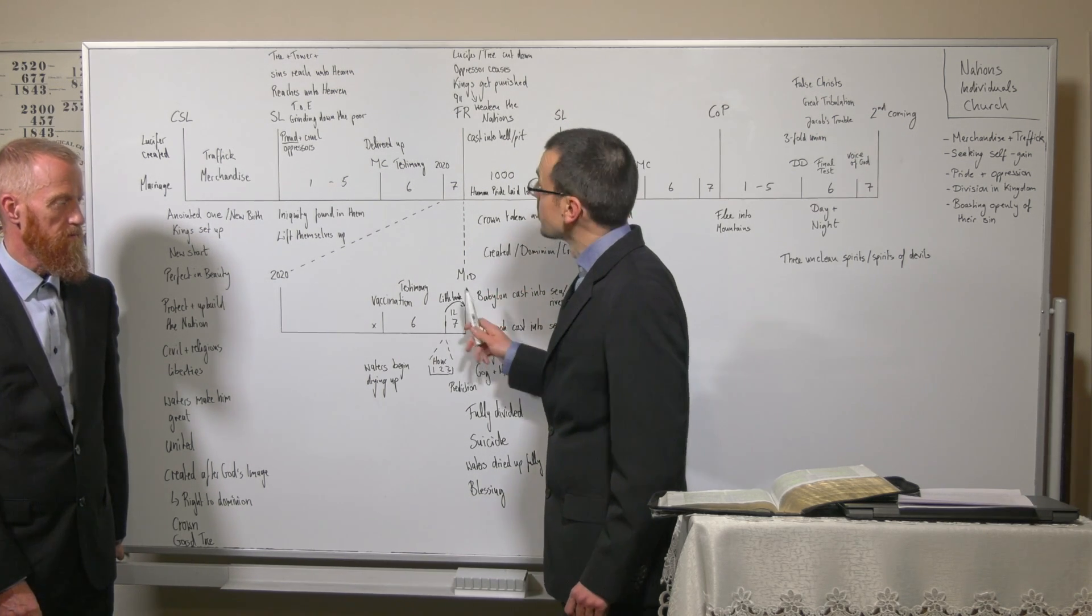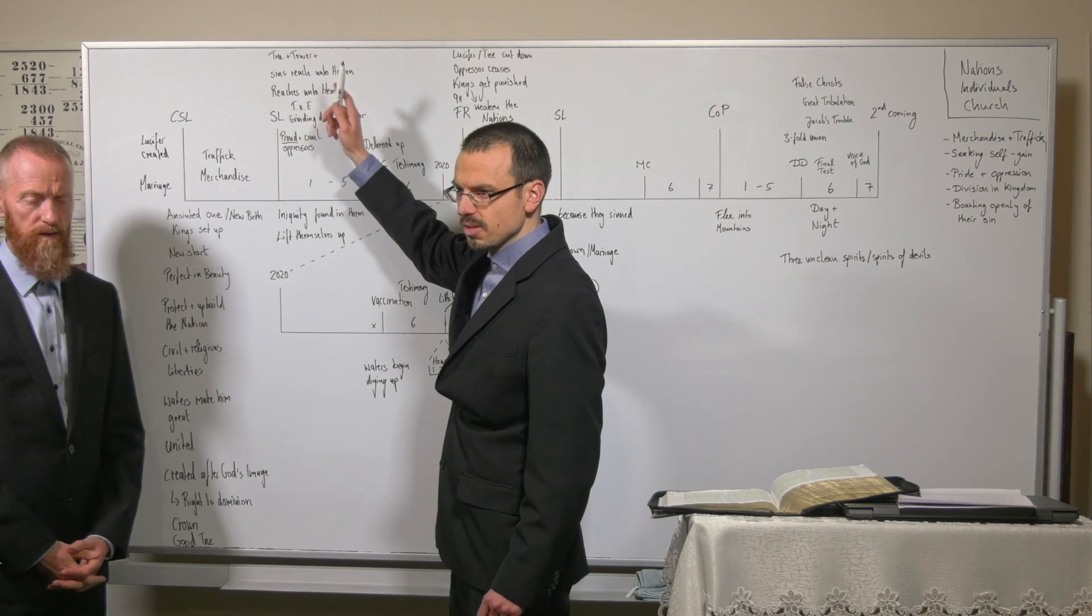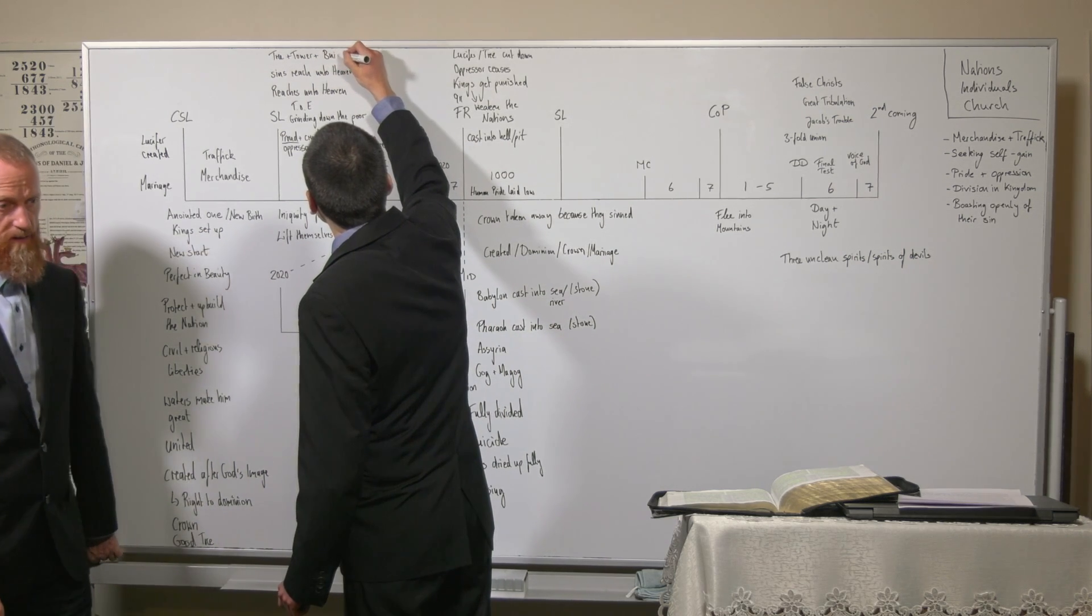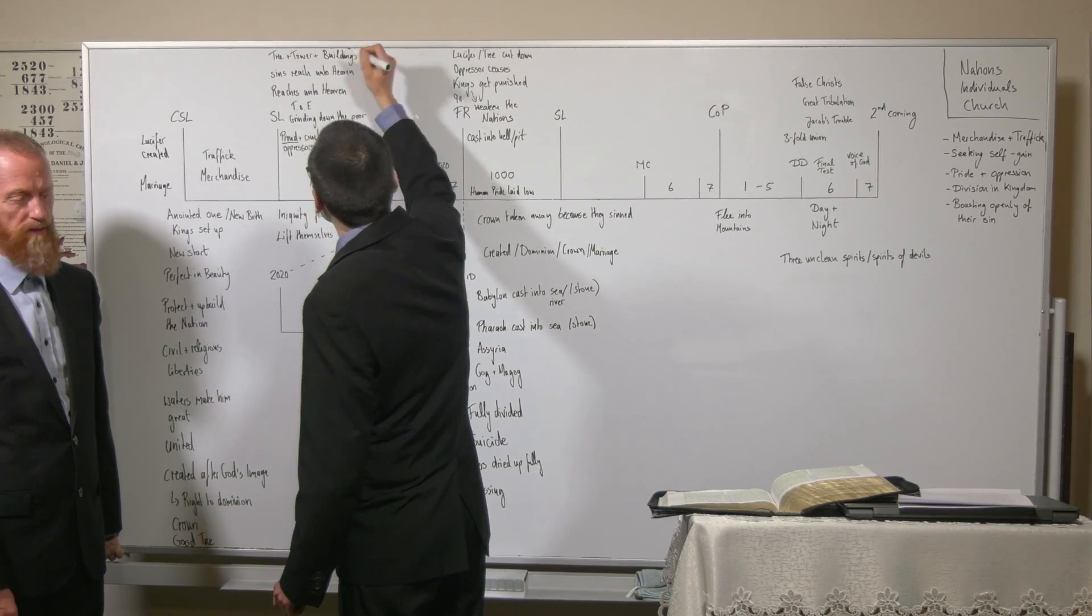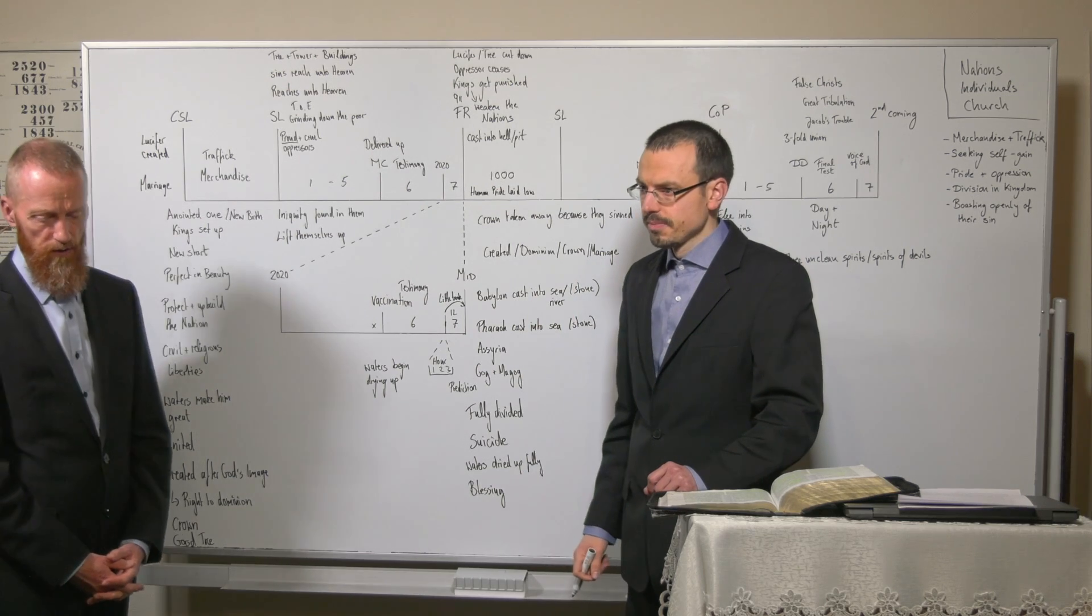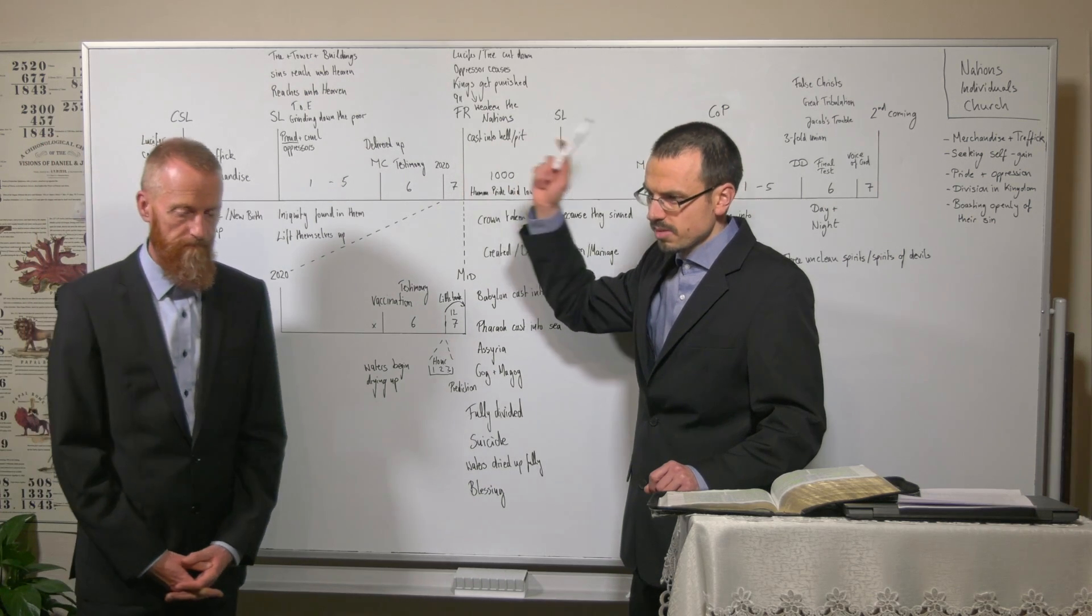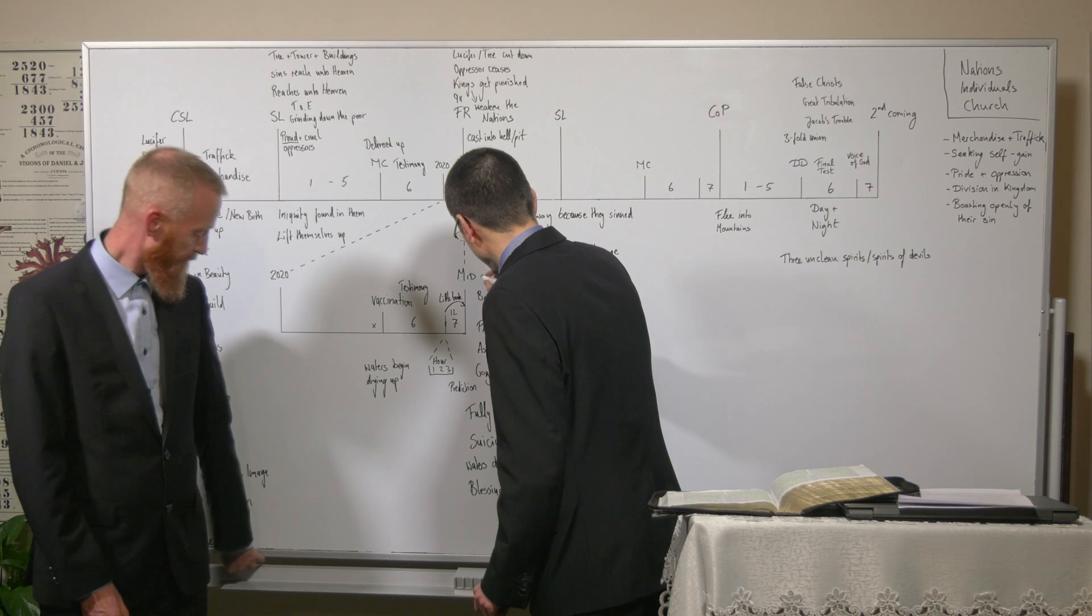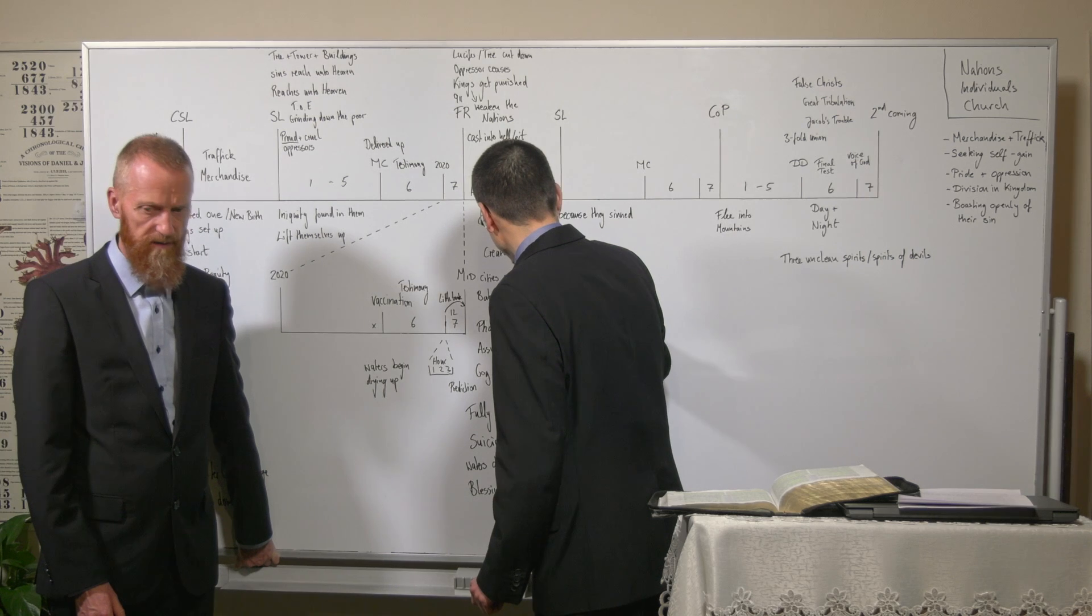We saw that the tree, the tower, and the great buildings - they all illustrate the same thing: that now the king gets punished. And we saw this already illustrated at 9/11 in a typical sense. Here, cities get punished.